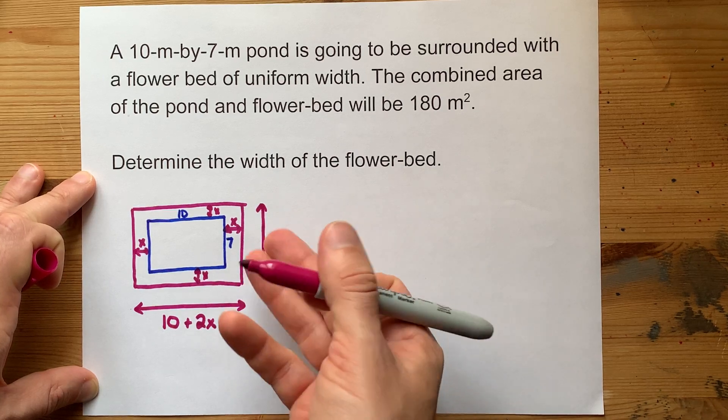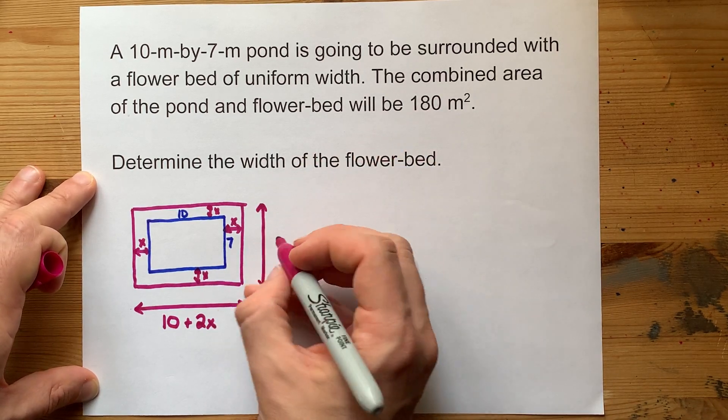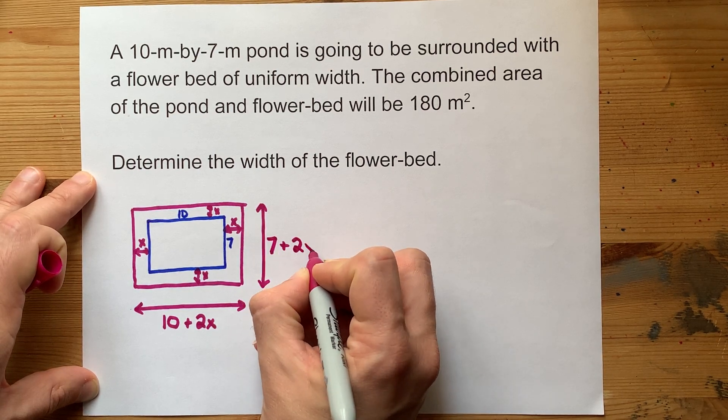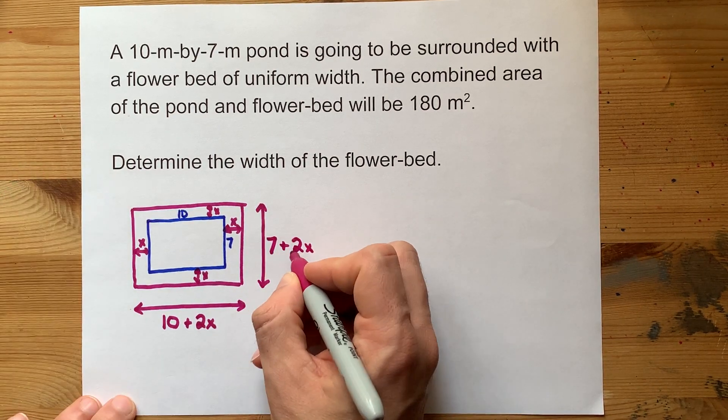I guess it's not height, it's like width of the rectangle or something. It was 7, and you're adding an X on top and you're adding an X on bottom. So it ends up being 7 plus 2X.